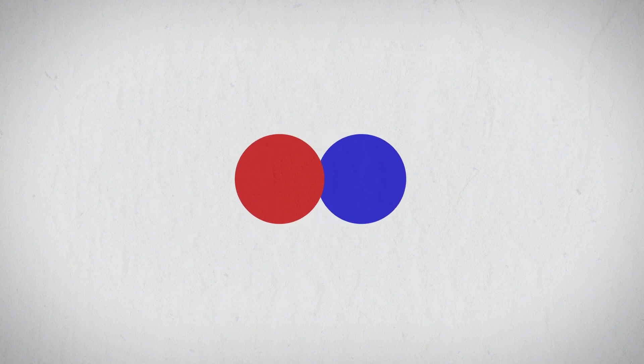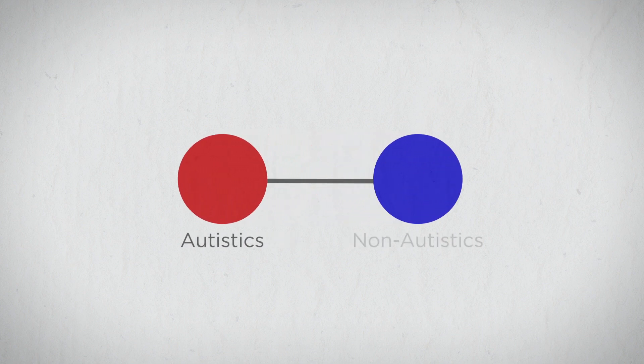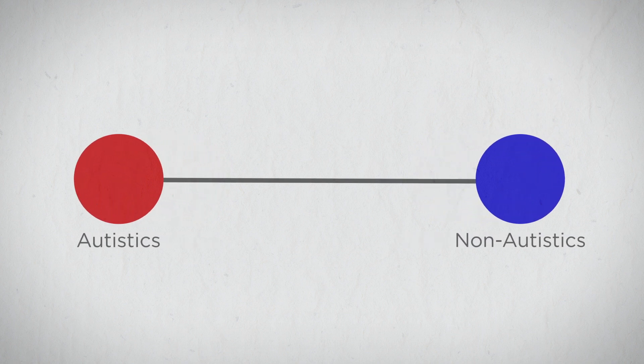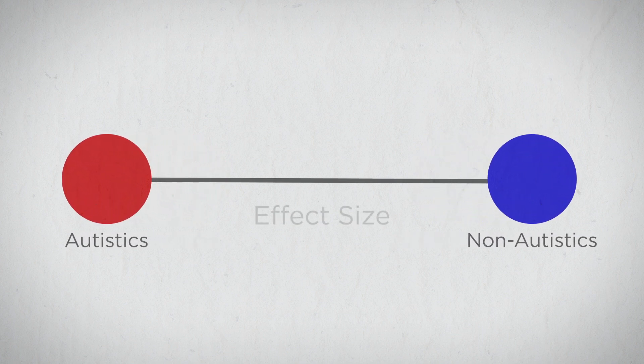When we want to understand in which aspects autistic and non-autistic people differ, we compare a group of autistics to a group of non-autistics and measure the difference between both. The extent of this difference is called effect size.